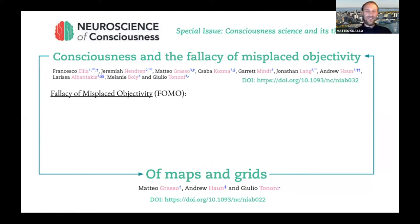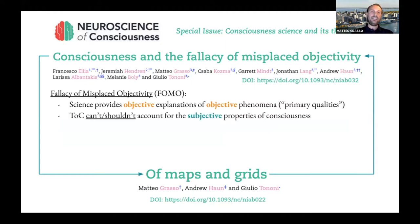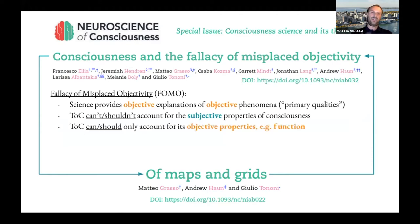The fallacy of misplaced objectivity, or FOMAL, is the idea — very well entrenched in science — that science provides objective explanations of objective phenomena, such as the primary qualities Galileo referred to. The fallacy is really the idea that theories of consciousness cannot and should not try to account for the subjective properties of consciousness, because a theory, to be scientific, can only account for objective properties — in the case of consciousness, only the functions that accompany it, since those are what we can measure.